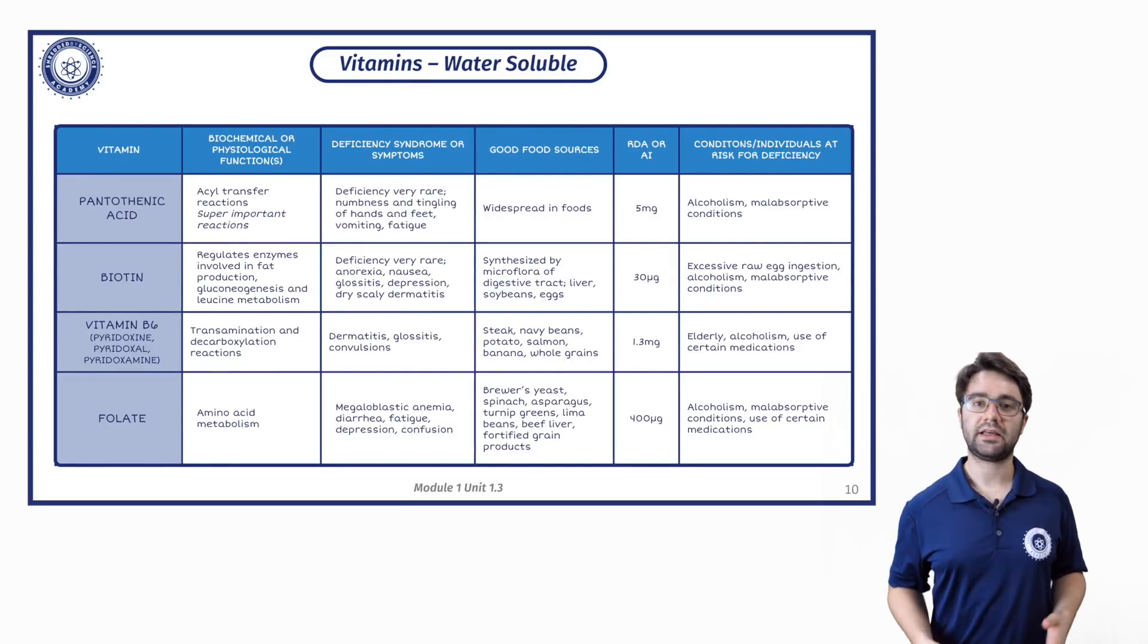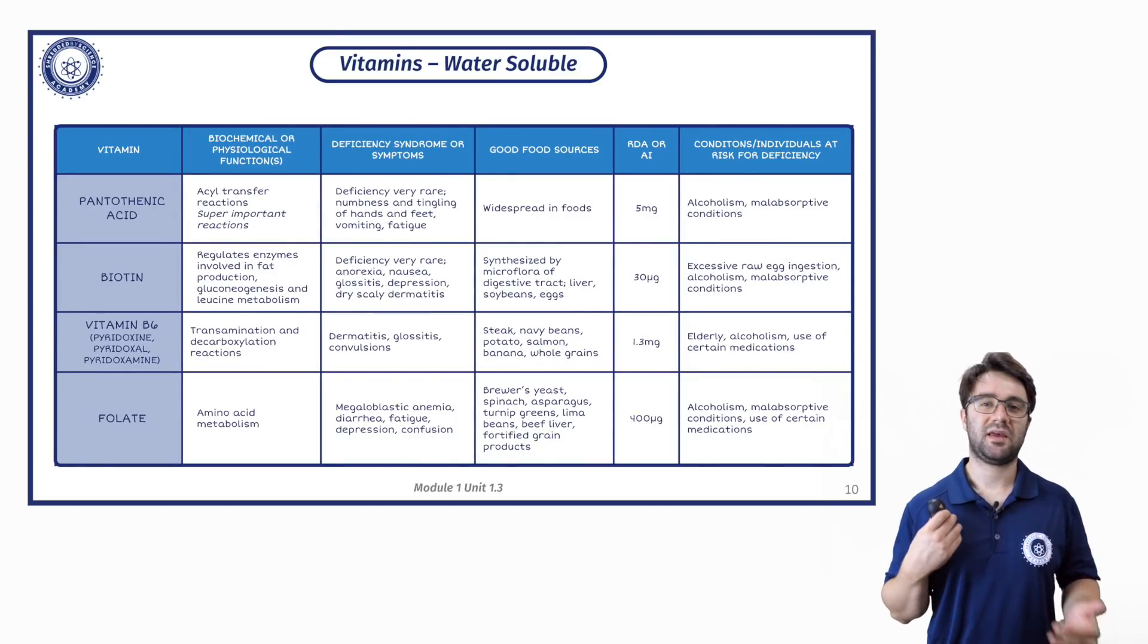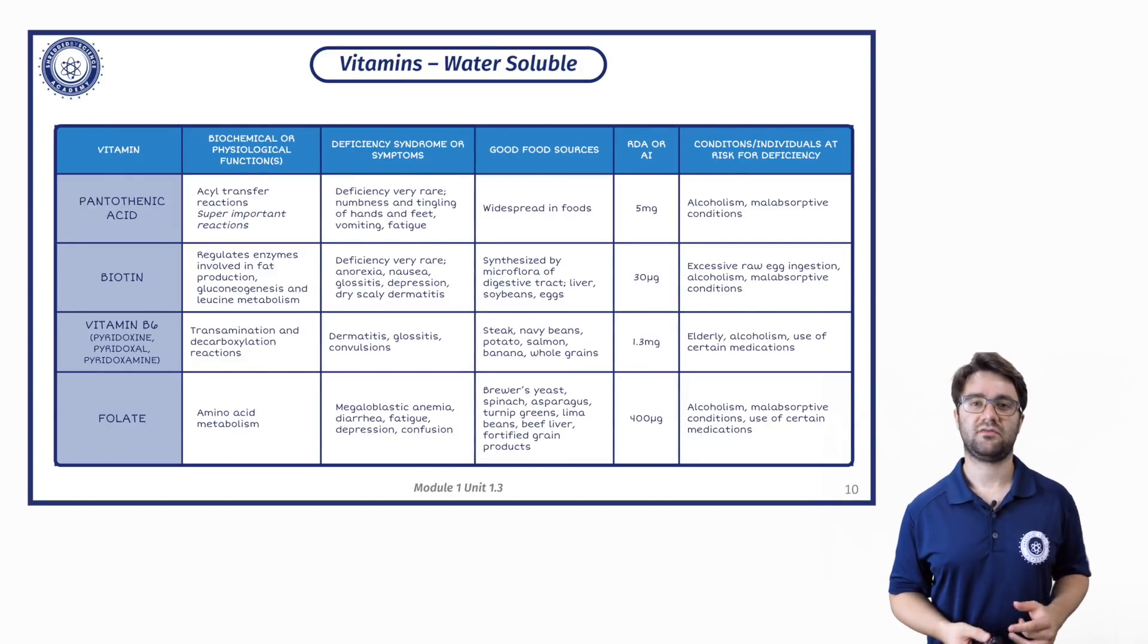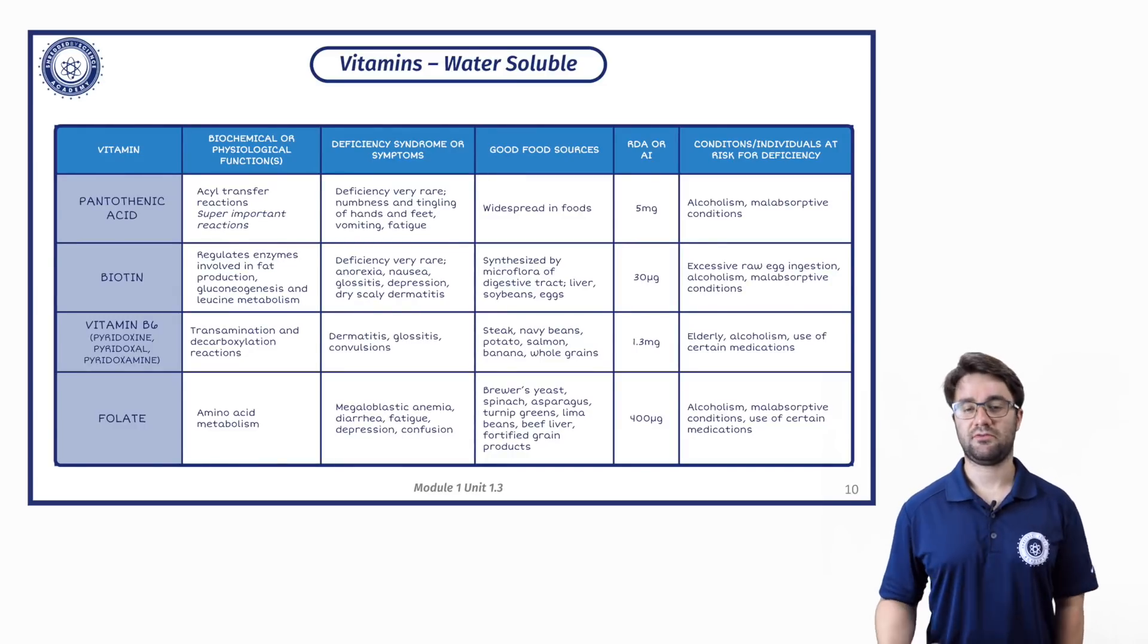You're not really going to encounter a huge amount of people with deficiency of pantothenic acid. It's very, very rare. If you are dealing maybe with alcoholics for some reason, they may be at risk of that or malabsorptive conditions where people just don't absorb enough through their intestinal wall.